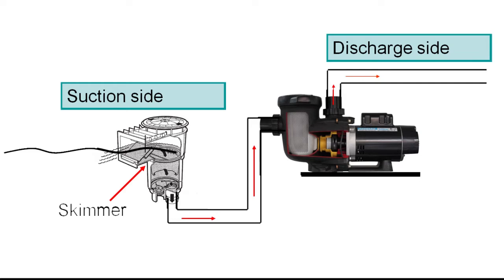Pumps lose prime for many reasons, and the most common are: 1. Water level is too low in the skimmer. 2. The pump pot O-ring that seals the lid goes bad. 3. A valve on the suction side starts sucking air. 4. A threaded fitting starts sucking air.